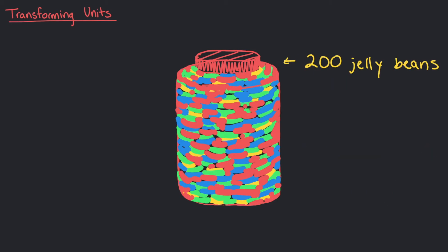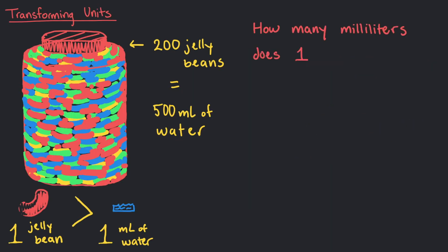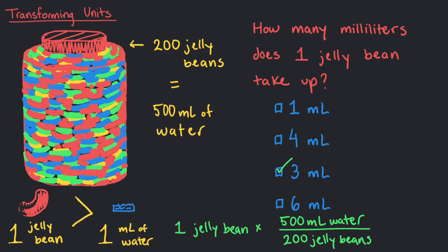This means one jelly bean takes up more space than one milliliter. How many milliliters does one jelly bean take up? Yes, a jelly bean takes up 2.5 milliliters, which can be rounded up to about 3 milliliters.